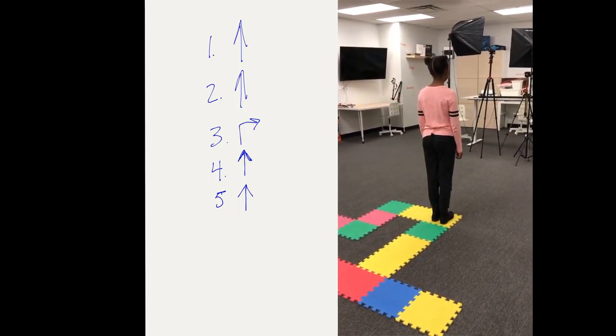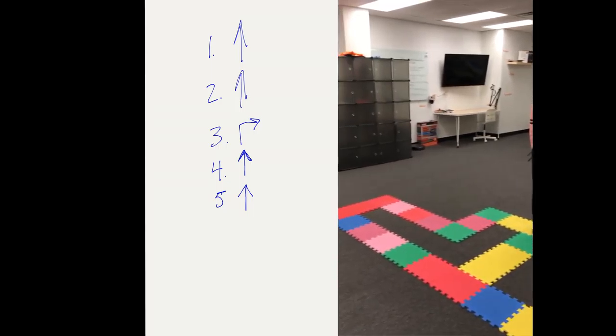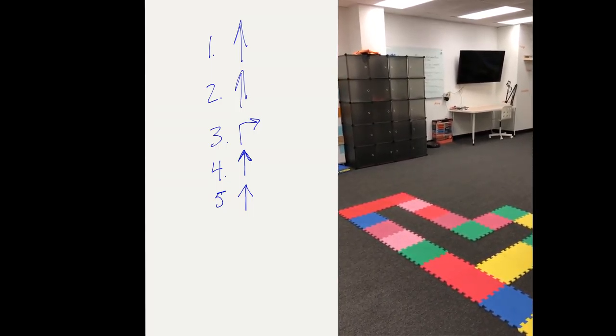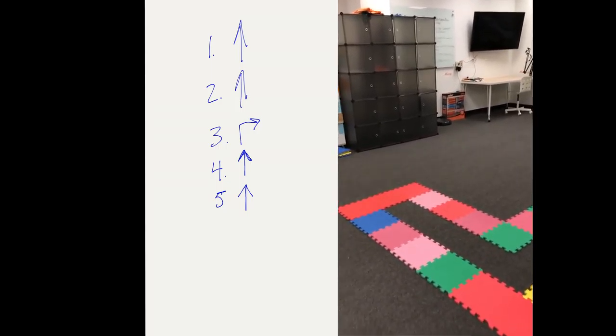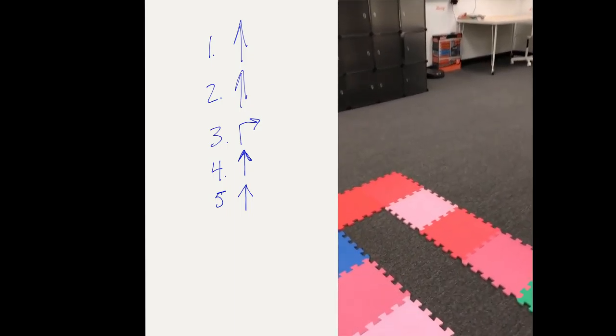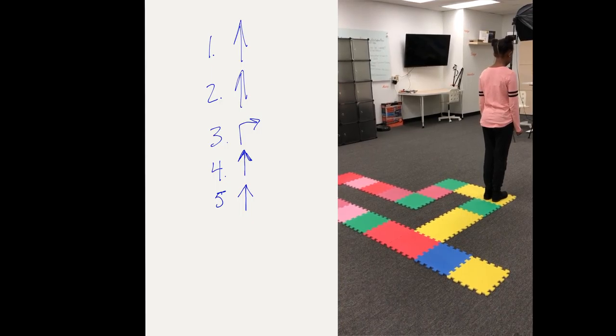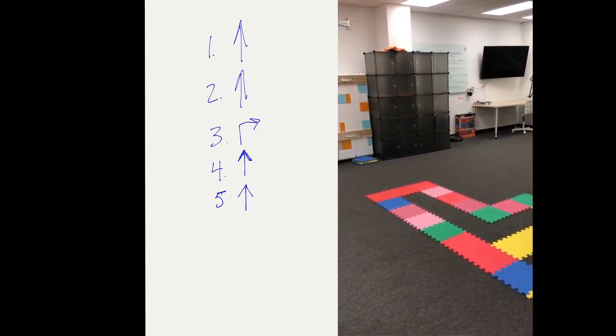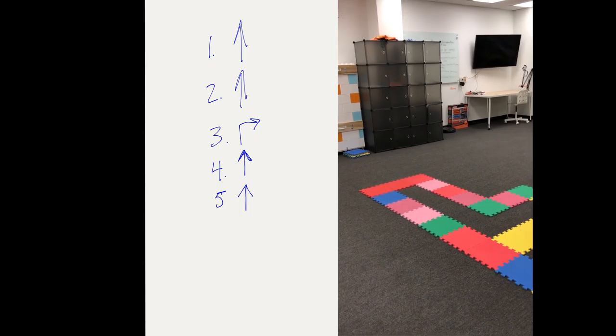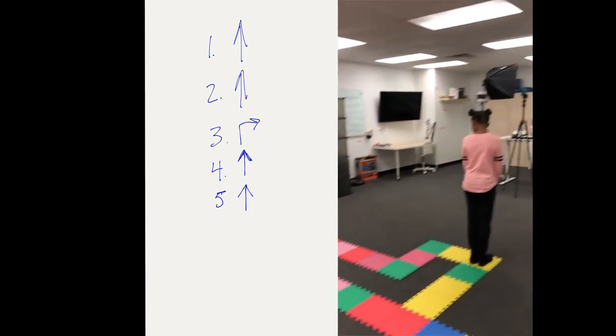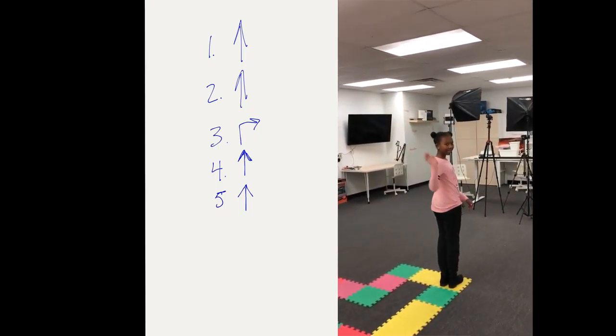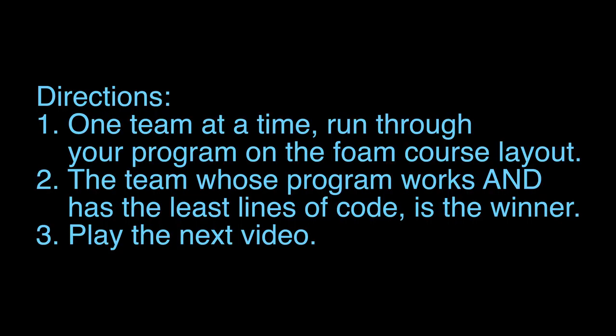So your program is going to have to be written to get to that finish block, which is, in this case, the pink square here. The second one right here. So, again, your code will be different, but this is giving an example of what to do and how to do it when you're actually running your program. So hopefully that helps you out. Say bye, Zora. Bye. And so then after everybody is gone, you should have a winner. And so once you get to that point, coaches, go ahead and play the next video. Bye.